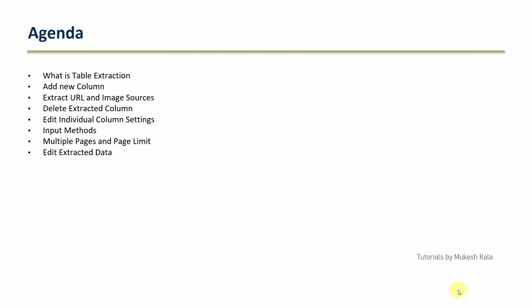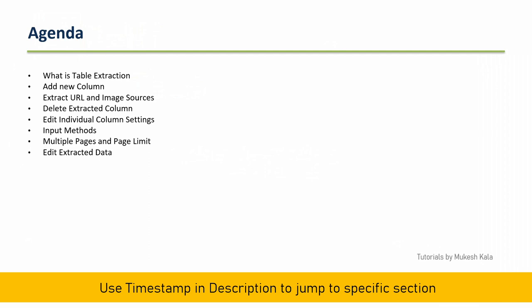The agenda for today covers: what is table extraction, how do you add a new column, how can we extract the URL and image sources, can I delete an extracted column, how can you edit individual column settings, can I change the input methods, how to work on multiple pages and set page limits, and how we can edit the extracted data. All of this will be covered with step-by-step demonstration. You can use timestamps in the video description to jump to any specific topic.